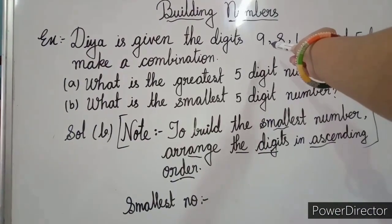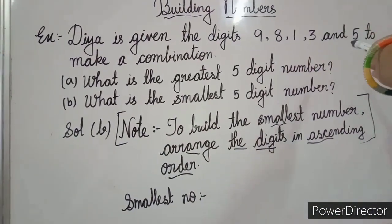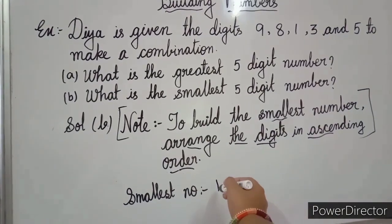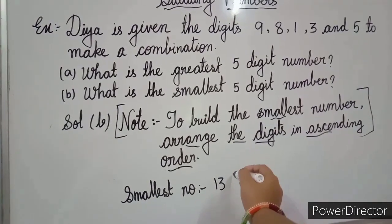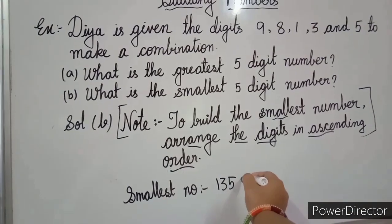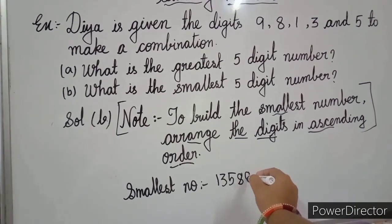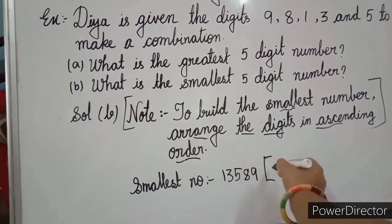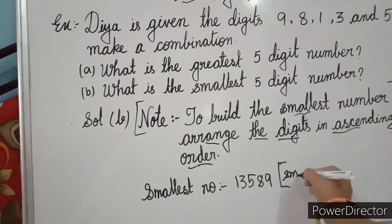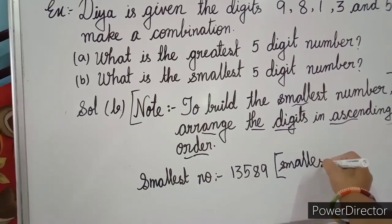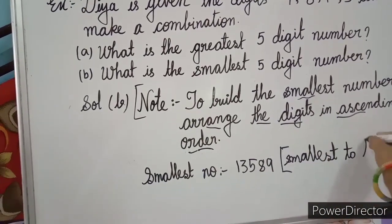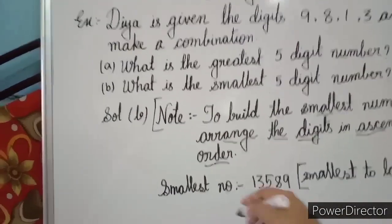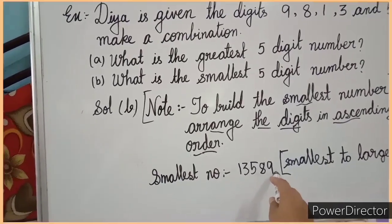So here are the digits 9, 8, 1, 3, 5. So the smallest digit is 1. Then the smallest digit is 3. Next, 5. Next, 8 and then 9. So it is smallest to largest. So the smallest number is 13589.